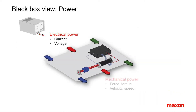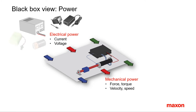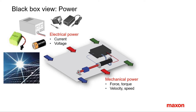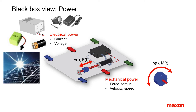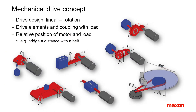Concerning power: on the input side of the black box there is the electrical supply with voltage and current. For DC power supplies there are different possibilities including batteries, accumulators, and solar panels. The output power is given by the required load motion — one can differentiate between linear motion with force and velocity, and rotational motion with torque and speed. Current and voltage must match the need of the drive system: how much voltage is required and available, how much current is required and can be delivered.